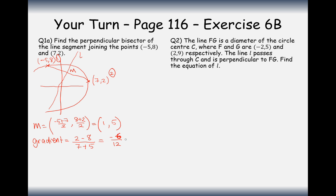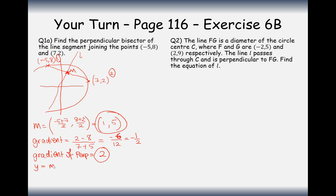So the gradient of the original line is minus a half. Therefore the gradient of the perpendicular is 2, because it's the negative reciprocal — or the number that multiplies with minus a half to make minus 1. This perpendicular line passes through M at (1, 5) with gradient 2. Substituting into y equals mx plus c: gradient is 2, x is 1, y is 5, so c equals 3. Therefore the answer is y equals 2x plus 3.